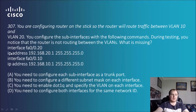So we've got the interface and the sub-interface there which looks right, the IP address and subnet mask looks fine, and then 0.10 as the next interface, and that all looks fine there.